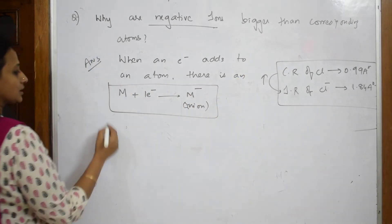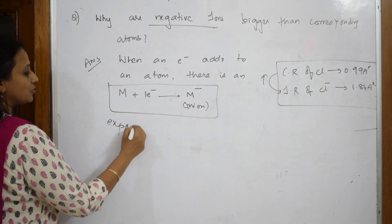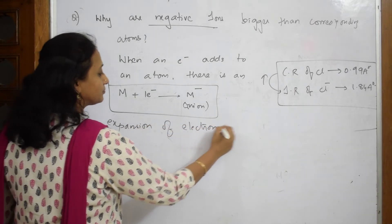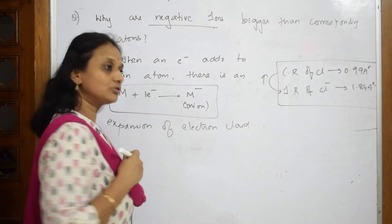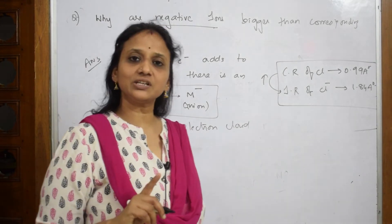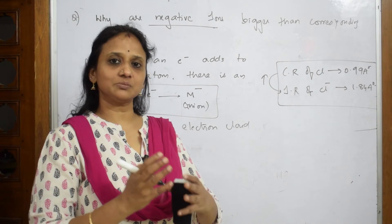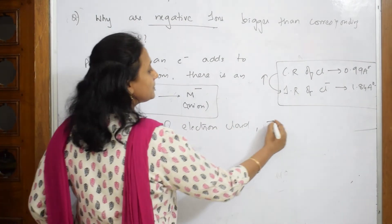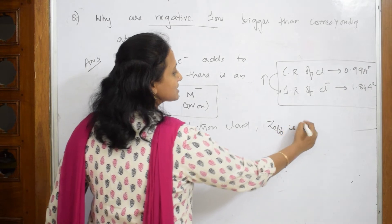When there is an expansion of electron cloud, Z effective will decrease or increase? Z effective will automatically decrease because the number of electrons are more than the number of protons. So Z effective is less.